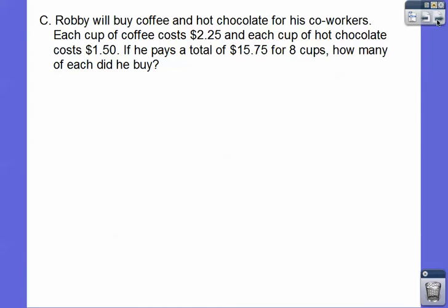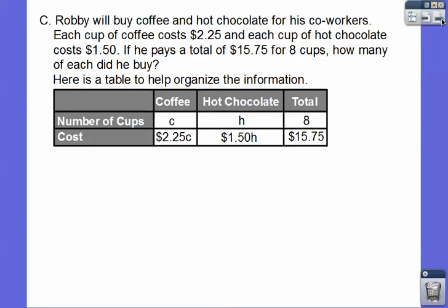Let's try another one. This one's just like it. Robbie will buy coffee and hot chocolate for his coworkers. Each cup of coffee is $2.25, and each cup of hot chocolate is $1.50. If he pays a total of $15.75 for eight cups, how many of each did he buy? I think we're using C and H for coffee and hot chocolate. So C plus H equals 8, and $2.25 times C plus $1.50 times H is going to give us $15.75. They give us this table, and it kind of helps us organize the information.